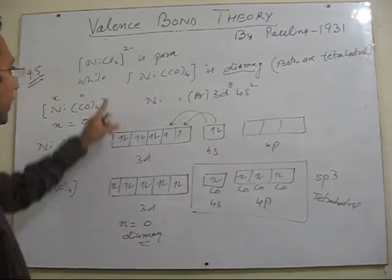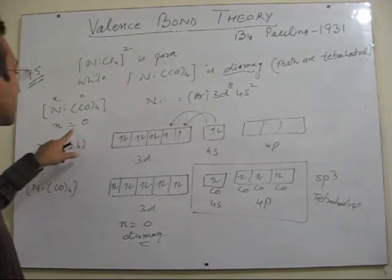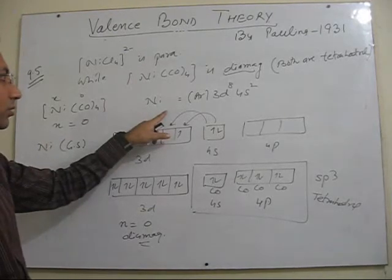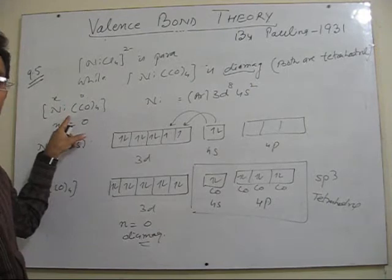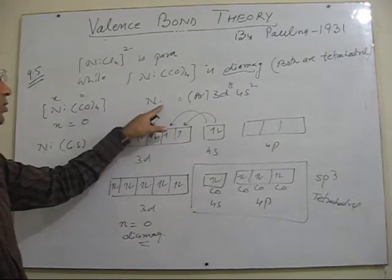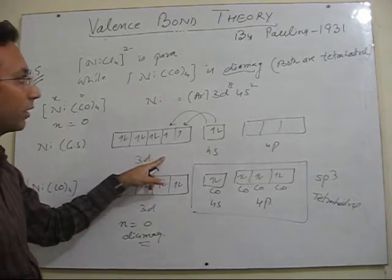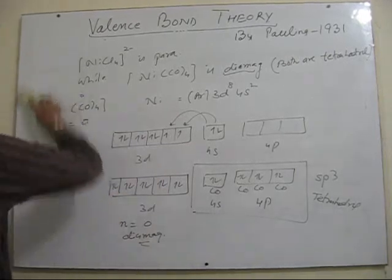So this is very important question. Here take care, in this complex nickel oxidation state is zero. It combines in its ground state. Students usually make mistake here calculating oxidation state. Usually they take nickel in plus 2 oxidation state and then further they cannot solve this question.